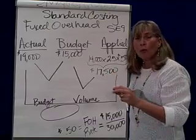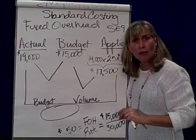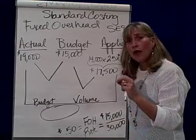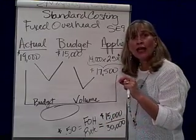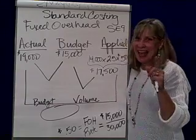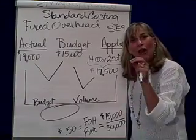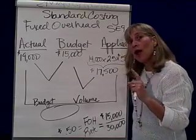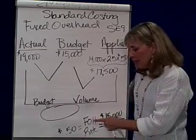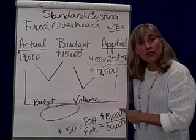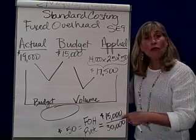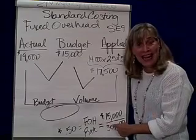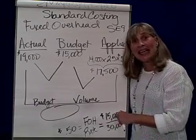You'll remember that we used to apply overhead, and we had under and over applied overhead. That overhead came from an overhead application rate we computed at the beginning of the year. And that overhead application rate is the overhead standard. The fixed overhead rate is budgeted fixed overhead over some sort of budgeted cost driver. That fixed overhead rate, or the fixed standard, is set at the beginning of the year.